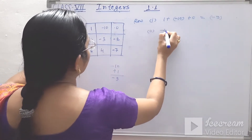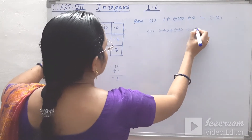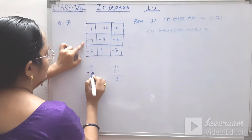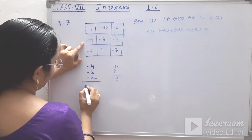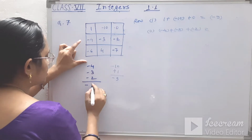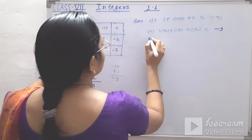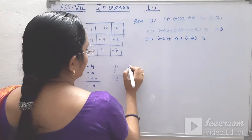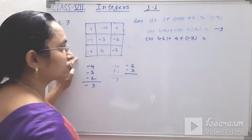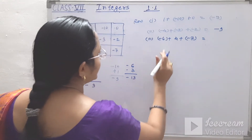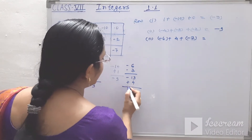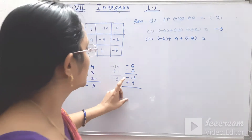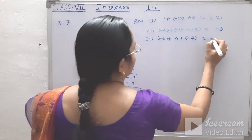Second row: minus 4 plus minus 3 plus minus 2. All are minus, so we add: 4 plus 3 plus 2 equals 9, answer is minus 9. Third row: minus 6 plus 4 plus minus 7. Minus 6 and minus 7 gives minus 13, and plus 4. Subtracting: 13 minus 4 equals 9, answer is minus 9.